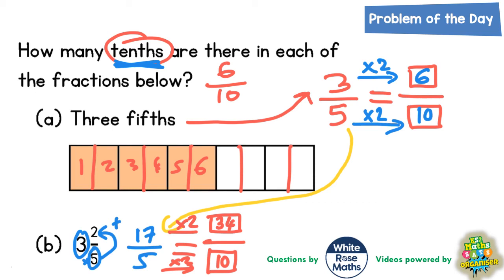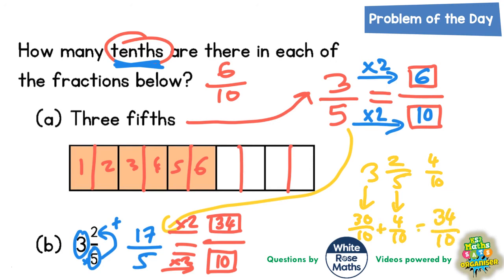The other way is to start with the 3 whole ones. In one whole one there are 10 tenths, two whole ones is 20 tenths, and three whole ones is 30 tenths. Then for the 2 fifths — if you double both the 2 and the 5, you get 4 tenths, which is an equivalent fraction. So 30 tenths plus 4 tenths gives you 34 tenths. Whichever way you look at it, the answer to Part B is 34 tenths.